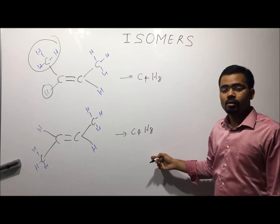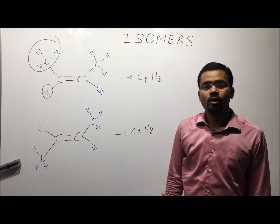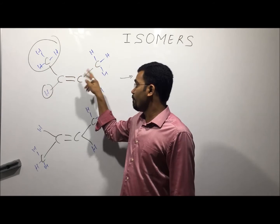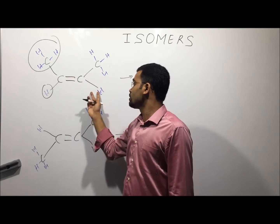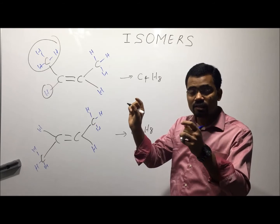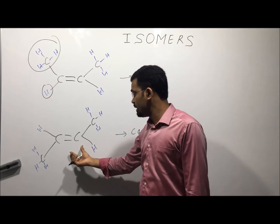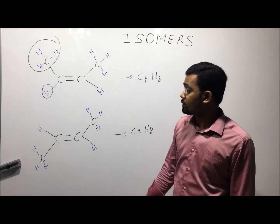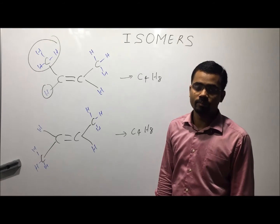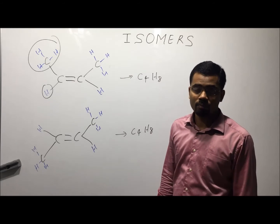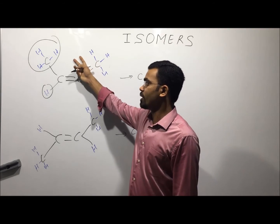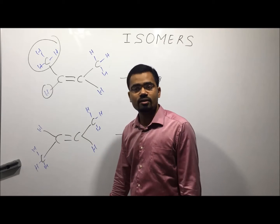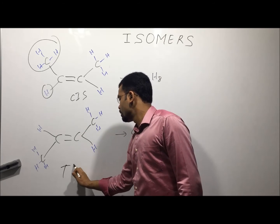Both have the same formula but different orientation in a plane (2D), therefore both are isomers. If you make a rectangle, in one structure the methyl groups and hydrogens are on each side of the rectangle, while in the other structure the hydrogens and methyl groups are on diagonal sides — both have different orientation. This is called cis if similar groups are on the same side, and trans if they are diagonal. So one is cis-butene and the other is trans-butene.